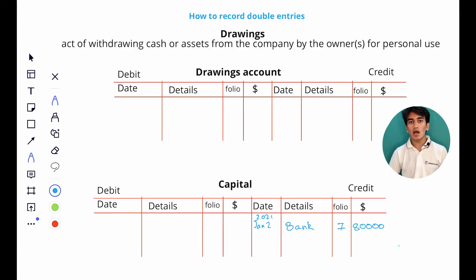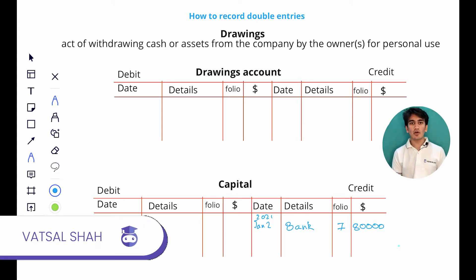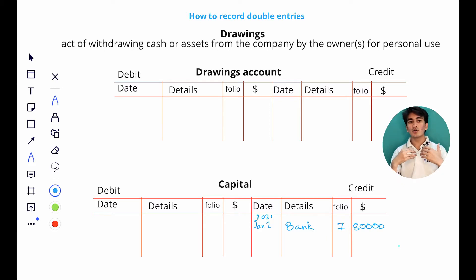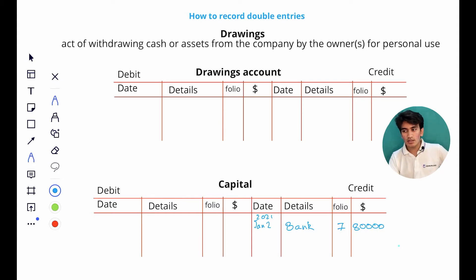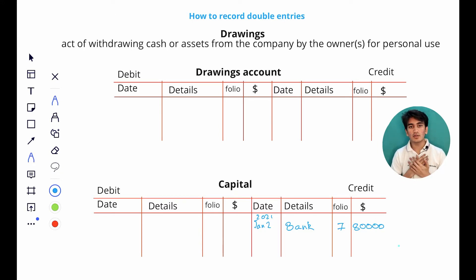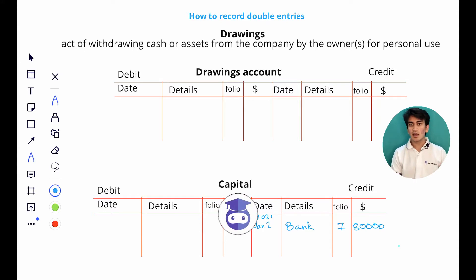Now let's look at what drawings are and how we record double entries for drawings. Drawings is an act of withdrawing cash or any other asset from the business by the owner for his or her personal use. For example, Alex on March the 3rd decides that he's drawing one hundred dollars from the business bank account - taking one hundred dollars worth of cash from the business bank account for his own personal use. Similarly, Alex could do the same thing with any other asset such as machinery, furniture, inventory, or stationery.